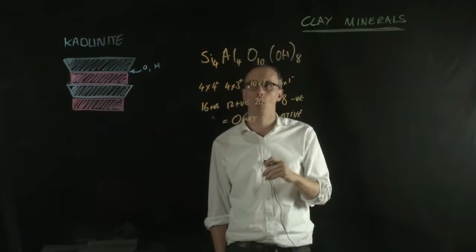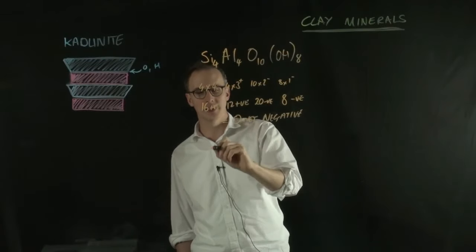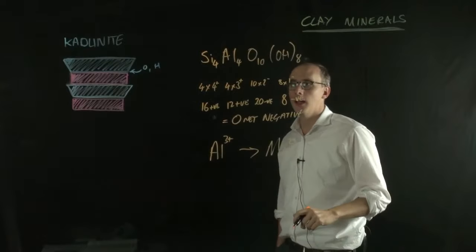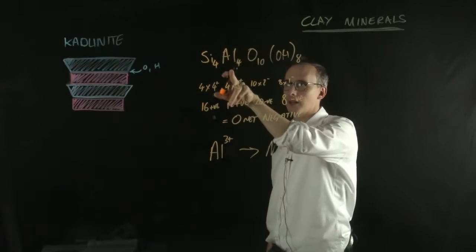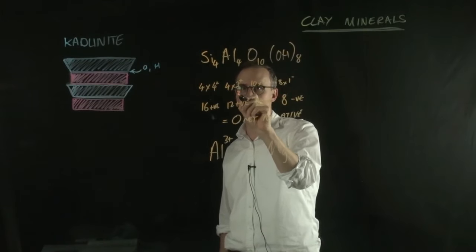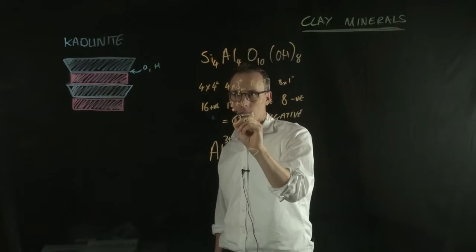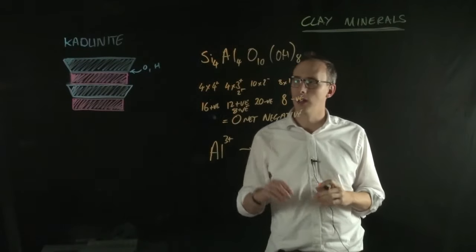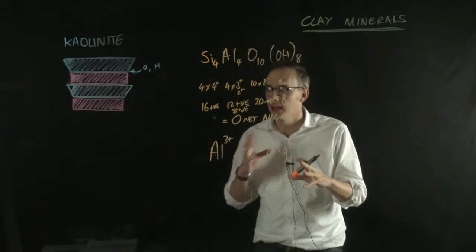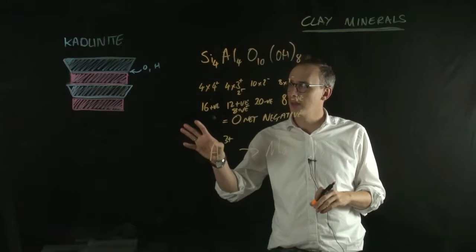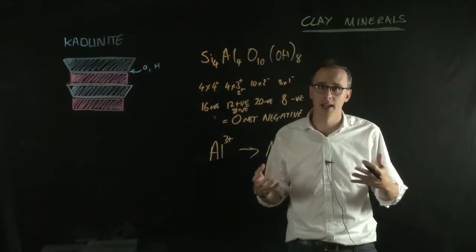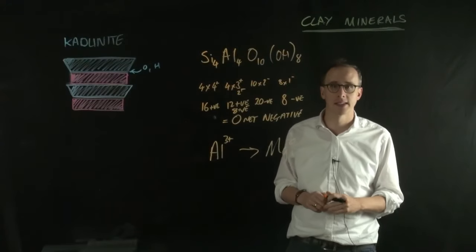But what would happen if we swapped some of that aluminum for magnesium? Well, instead of aluminum three-plus, we would go to magnesium two-plus. If we swapped all of the aluminum in kaolinite to magnesium, we would be left with four times two-plus. So, we'd be left with eight positive. So, we'd be left with an overall surplus of four negative charges. To try and counteract that, the illite and montmorillonite rearrange the arrangement of sheets and crystal structures and also include the interstitial cations, the positive cations, to counteract that excess negative charge.